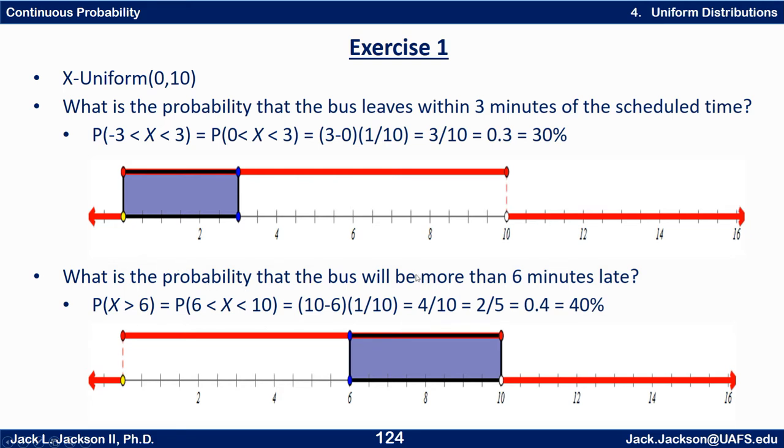What's the probability the bus will be more than six minutes late? Well that's from 6 up to 10 because they said you can't be more than 10 minutes late. There's no area out here to worry about. So it actually just stops at 10. So it's 6 to 10 here is our base which is a base of 4. 10 minus 6 is 4. And again it's a height of 1 tenths so it's 4 times 1 tenths is 4 tenths, 0.4, 40 percent or a reduced fraction that's 2 fifths.